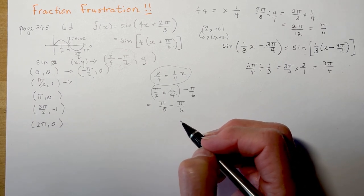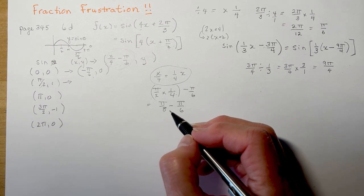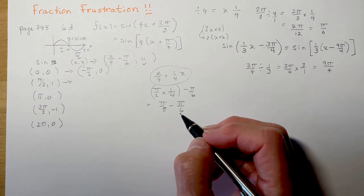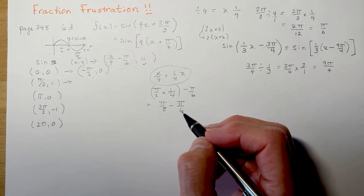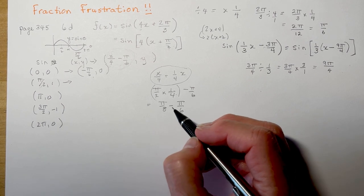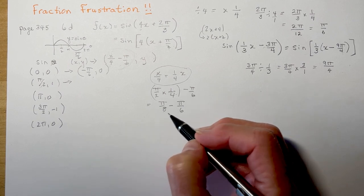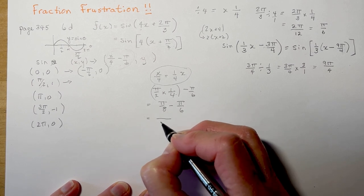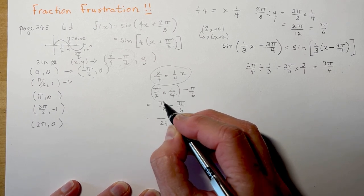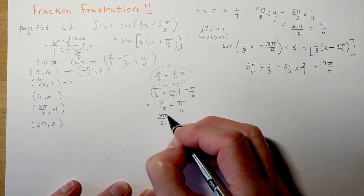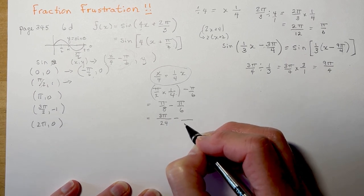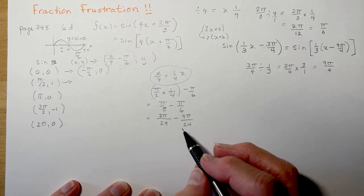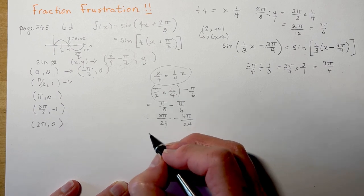You can't subtract fractions with different denominators — just like you can't do a quarter minus a third without making them both over 12. The lowest common denominator of 8 and 6 is 24. So I convert: multiply π/8 by 3/3 to get 3π/24, and multiply π/6 by 4/4 to get 4π/24. So I have 3π/24 minus 4π/24.